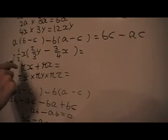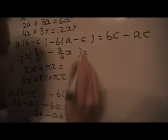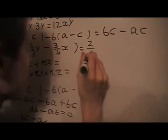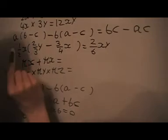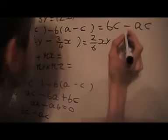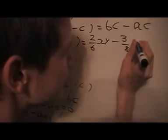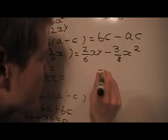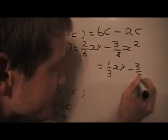On this one here what I can do is I can multiply these fractions and simplify these brackets. So let's do that. That's 1/3 xy minus 3/8 x squared. And that can be simplified to 1/3 xy minus 3/8 x squared.